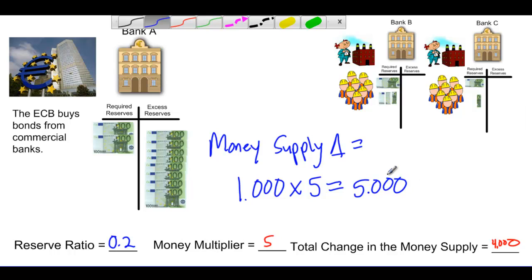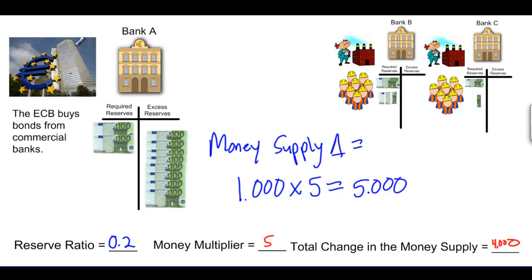Why, when private individuals put €1,000 into the banking system, did the money supply only increase by €4,000, as opposed to when the central bank buys bonds, where it increases by €5,000? This is because money held at the ECB was not counted in the nation's money supply. Therefore, the central bank's purchase of government bonds increases the money supply by more than when a private spender or saver puts money into the nation's banking system.